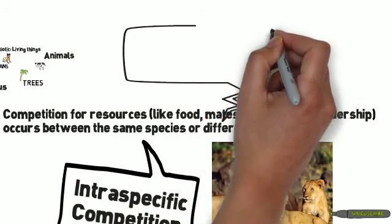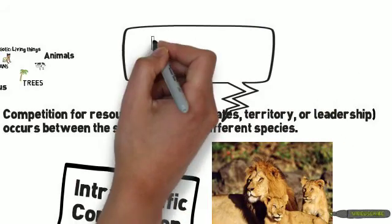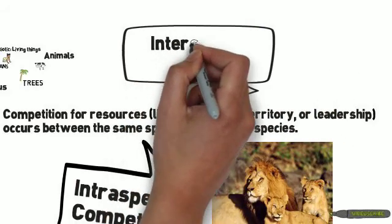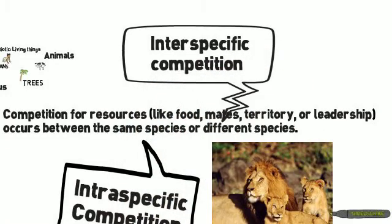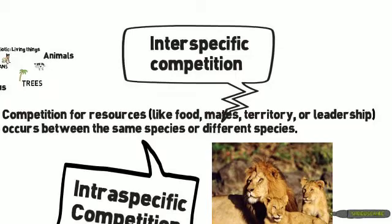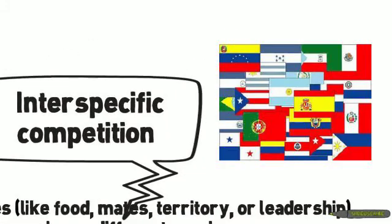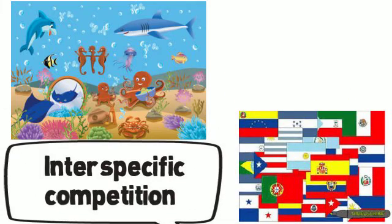When different species compete with one another, it is called interspecific competition. To remember this, know that international means between lots of different nations, so interspecific competition is a competition between lots of different species.